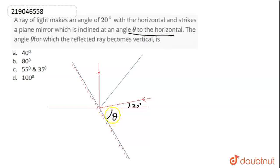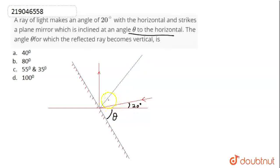We need to find the value of theta. The ray of light is 20 degrees below the horizontal at the point where it hits the mirror. We can draw the diagram showing the ray crossing into the vertical direction, and we look at the angle between the ray and the vertical.